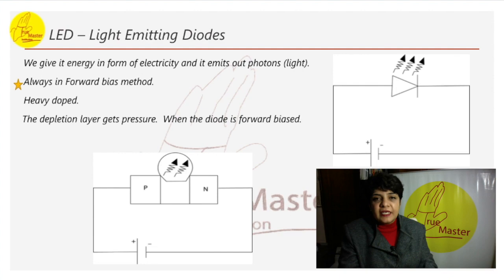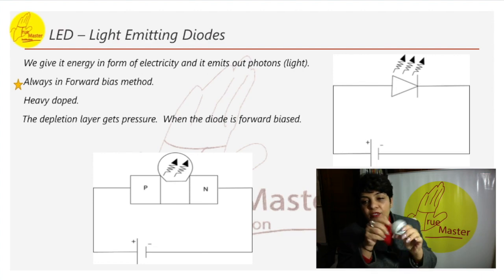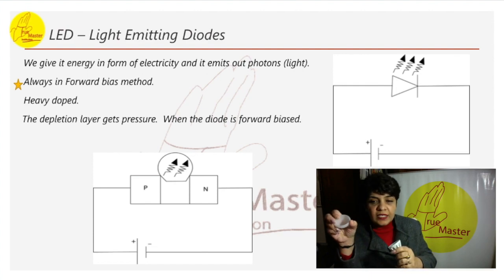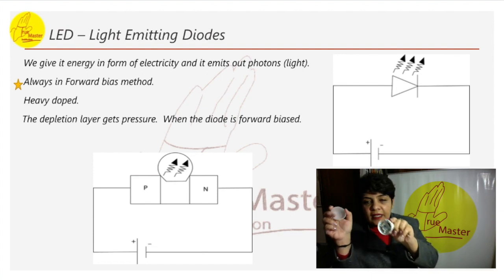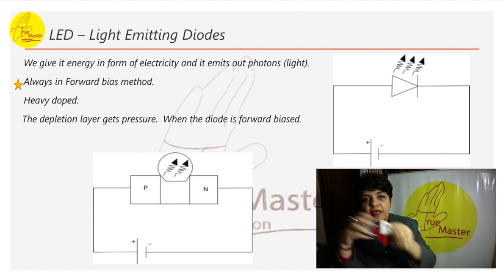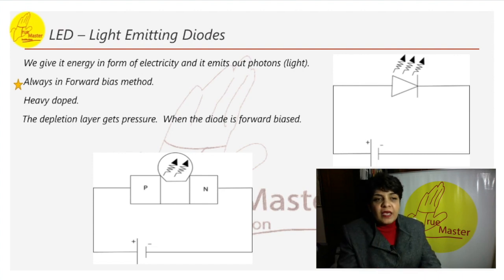Coming on to LED light emitting diode. Here I am just showing you a bulb which was kept in the house and this is a LED bulb. See this coating inside? This is resin coating. And this is how it is from inside. This is a LED bulb. It is a device in which we give energy in form of electricity and it emits photons.